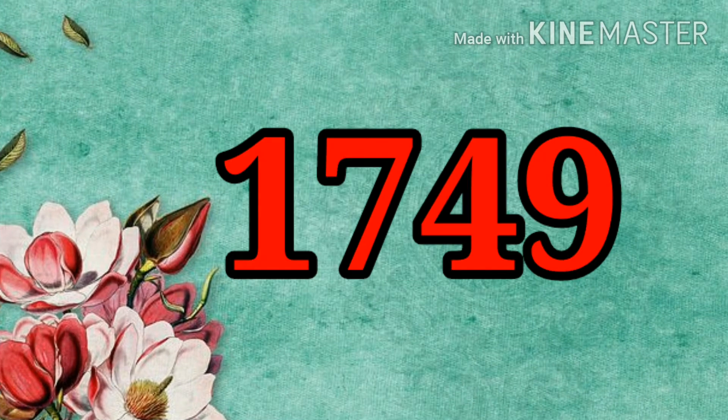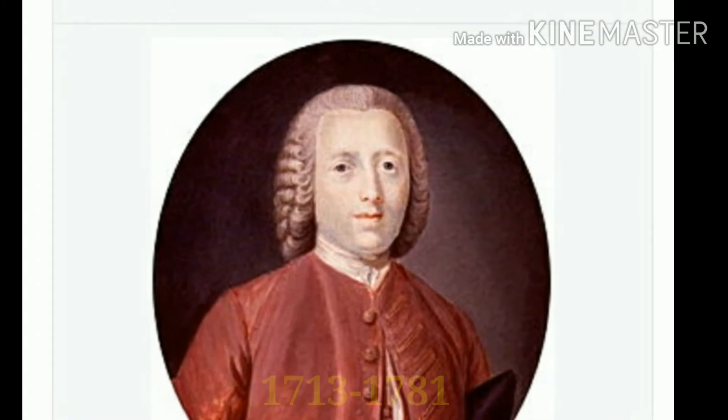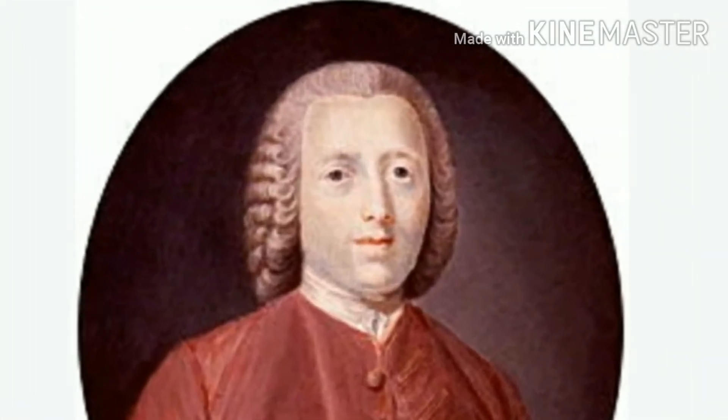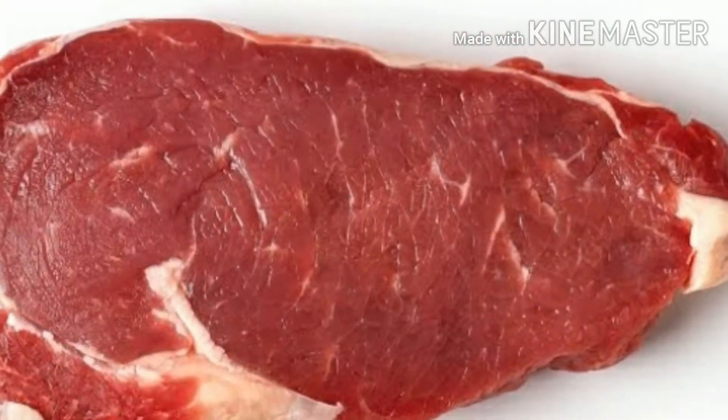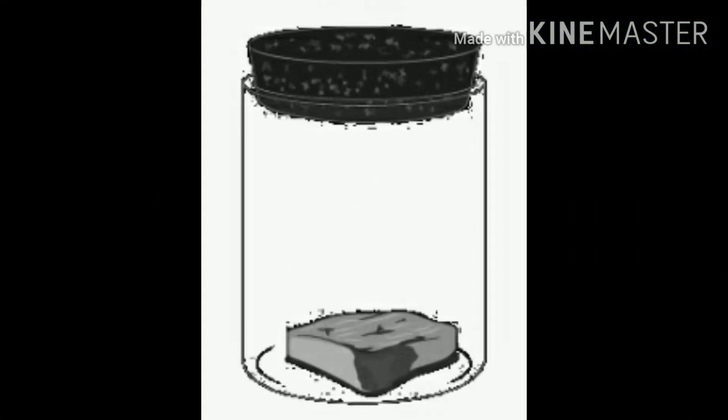In 1749, John Needham published a report of his own experiment in which he exposed meat to hot ashes hoping to kill all pre-existing microbes. He then placed the treated meat into flasks and sealed the flasks.